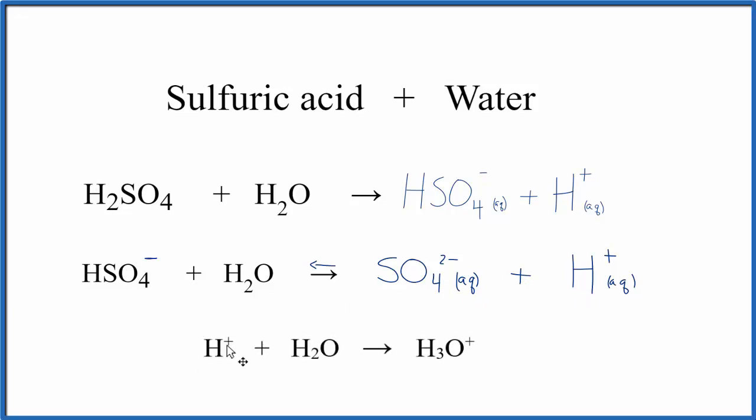So note that when we have H+ and it's in water, the H+ will combine with the water and will form H3O+. It's called the hydronium ion. So oftentimes when you see these equations, the H+ will be written as H3O+. Both of these are what makes a solution acidic.